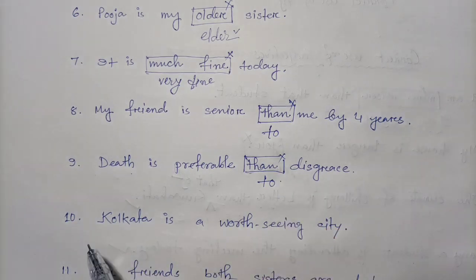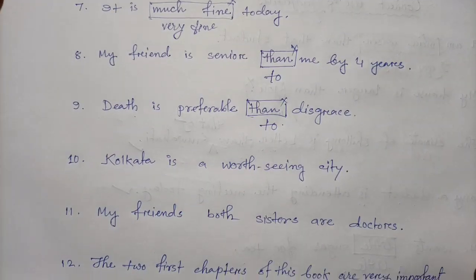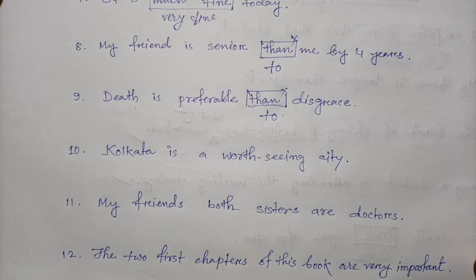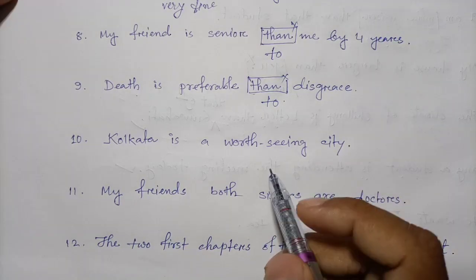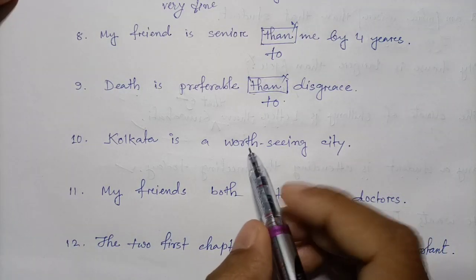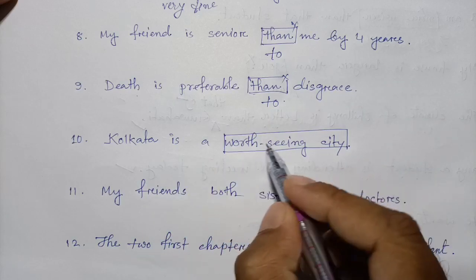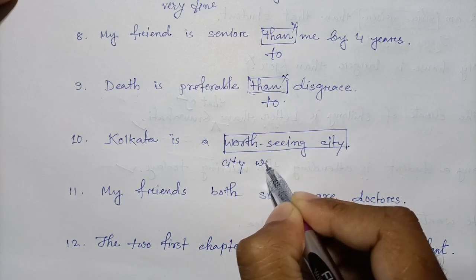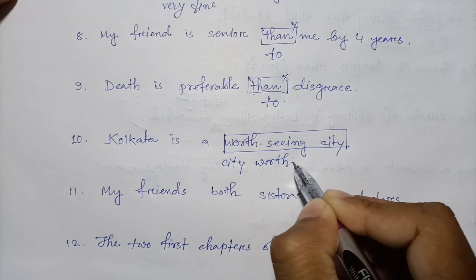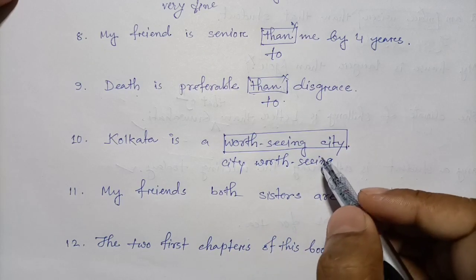Question ten: 'Kolkata is a earth-saying city.' The correct sentence should use the proper phrasing — 'Kolkata is a city worth seeing' or with the correct adjective form.